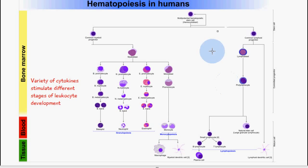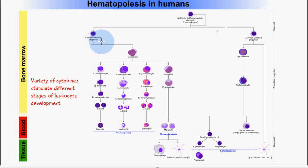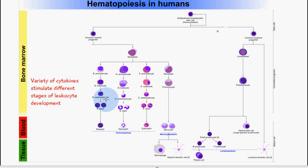Let's look at the basophil pathway. From the hemocytoblast, it forms the common myeloid progenitor, then the myeloblast. From here it can differentiate into the basophilic promyelocyte, then the basophilic myelocyte, then the basophilic metamyelocyte, then the basophilic band, and then it forms the basophil.